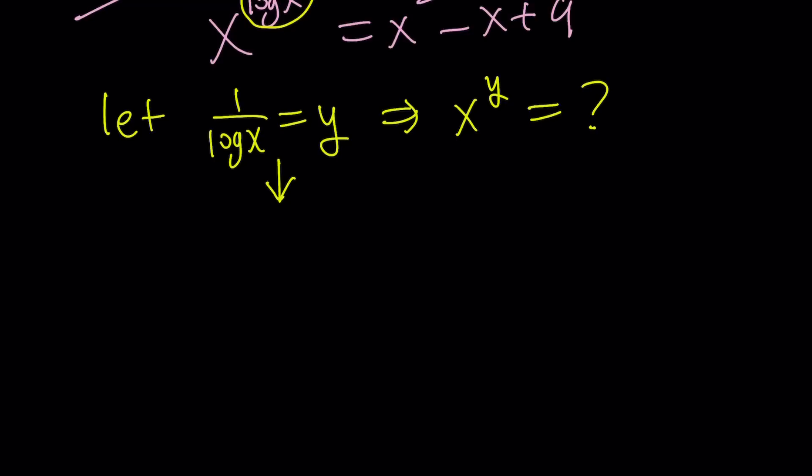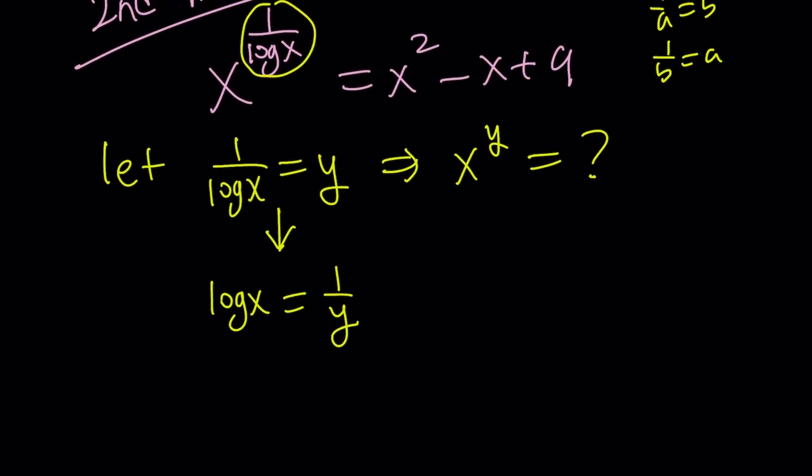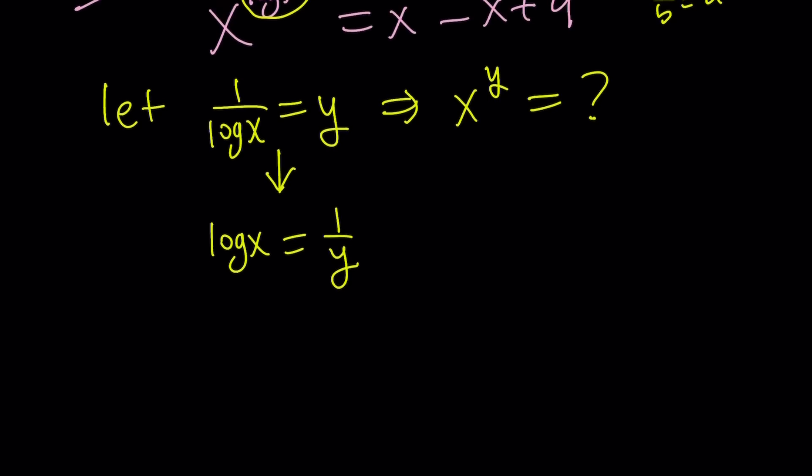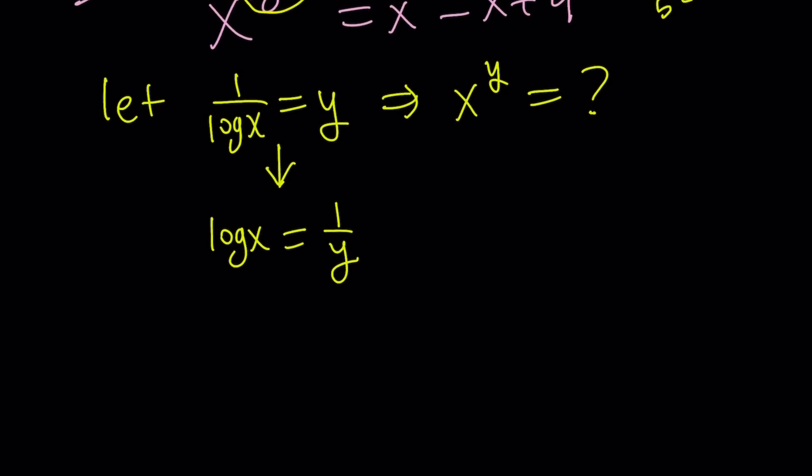First of all, these are reciprocals. So, let's go ahead and switch them around and write this as log x equals 1 over y. I know some people are going to cross multiply and then divide. It's just a longer way to do it. Let me just tell you. If 1 over a is equal to b, then 1 over b is equal to a, provided that none of these are 0. Okay. Make sense? Because reciprocals can be switched around like that. Okay. So, log x equals 1 over y.